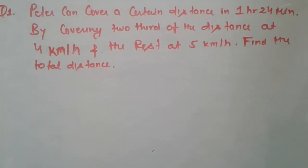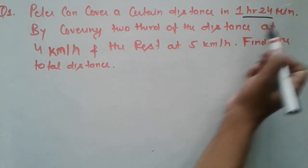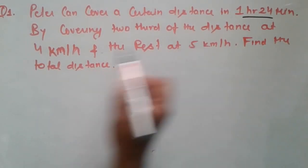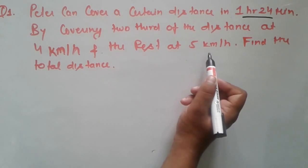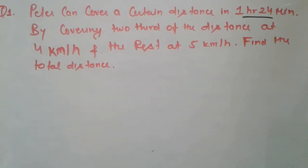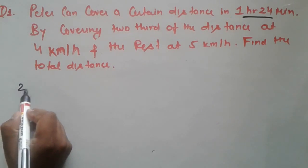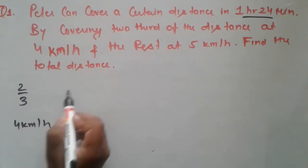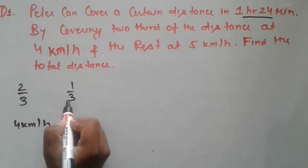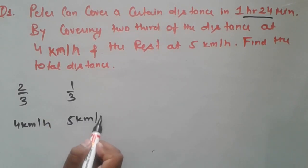Here is the first question. Peter can cover a certain distance in 1 hour 24 minutes by covering two-thirds of the distance at a speed of 4 km per hour and the rest at 5 km per hour. Find the total distance. Peter covers two-thirds of the distance at 4 km/h and the remaining one-third at 5 km/h, and we have to calculate the total distance.